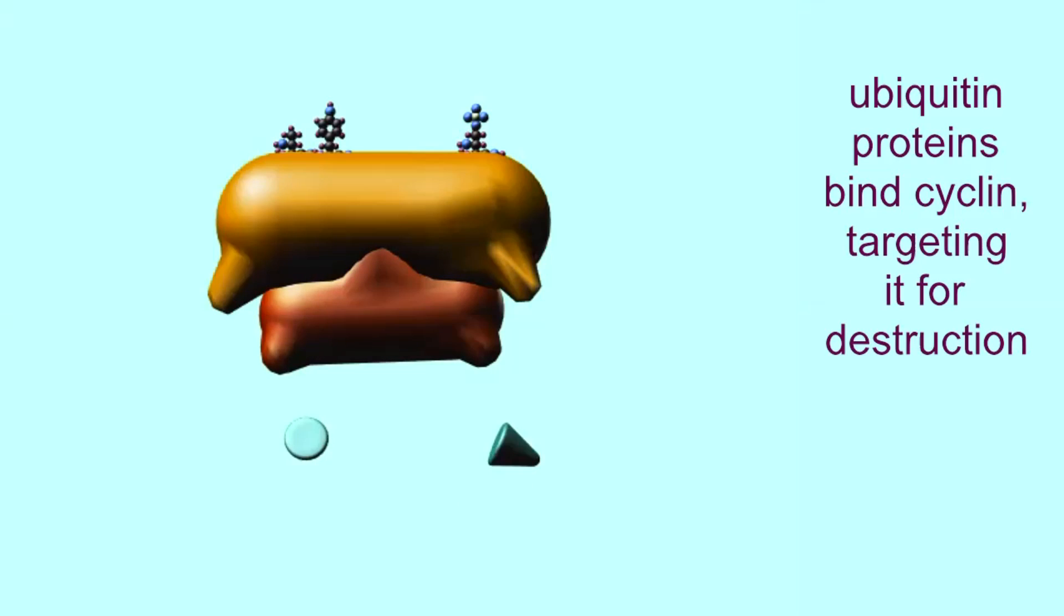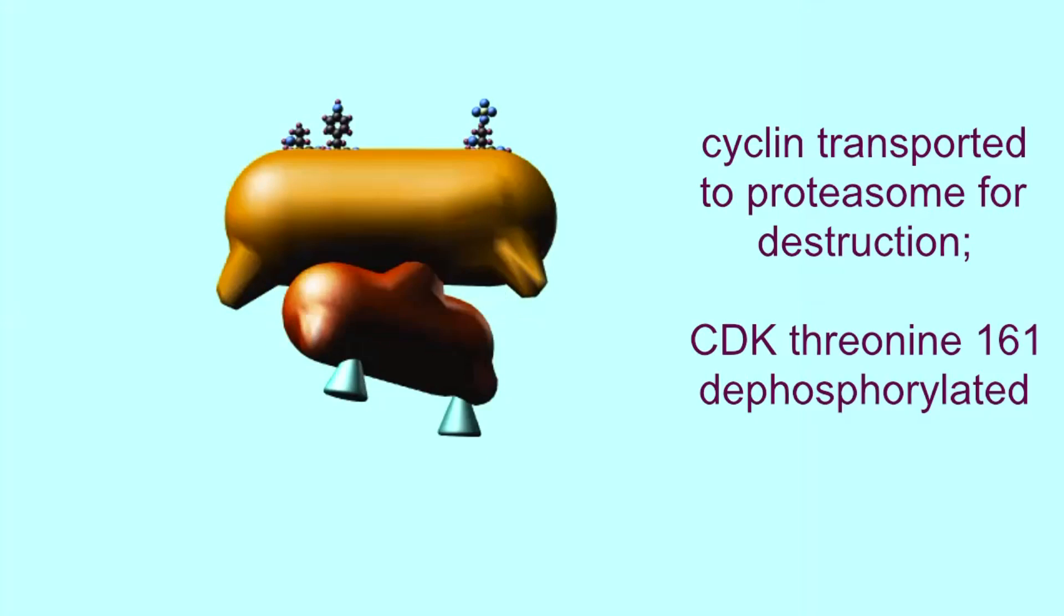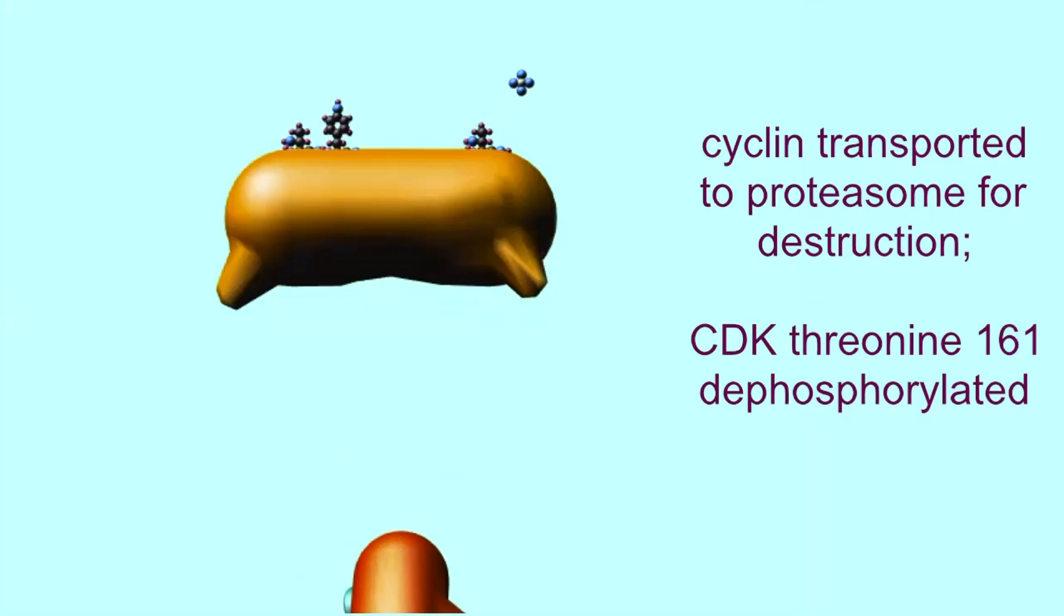A small protein known as ubiquitin binds to cyclin and targets it for destruction. It will dissociate from the CDK and move to the proteasome in the cytoplasm.